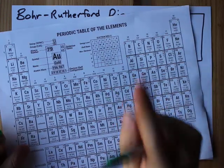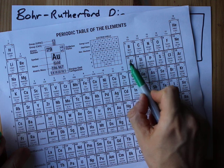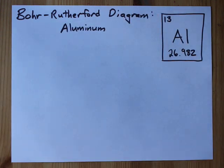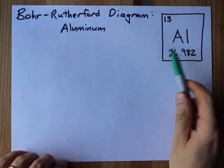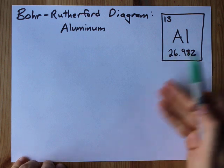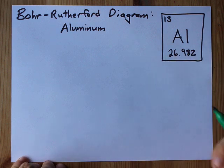Aluminum on my periodic table, and hopefully yours too, has an atomic number of 13, and my mass number is about 27. Please round this to the nearest whole number for mass number.